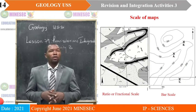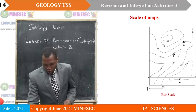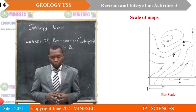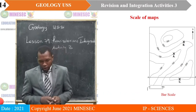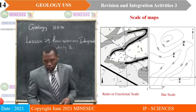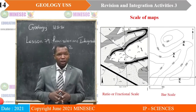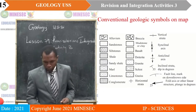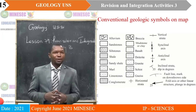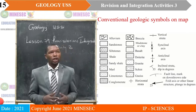We saw scales on maps. We saw maps with fractional scales — like a scale of 1:40,000 — and we also saw bar scales, where there is a line segment that is graduated. Then we saw conventional geologic symbols on maps, including symbols for loose materials as well as solid materials.